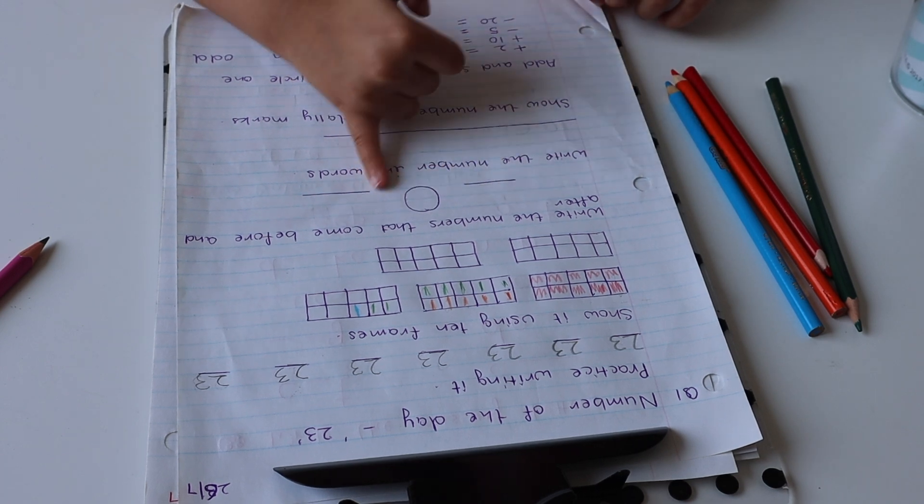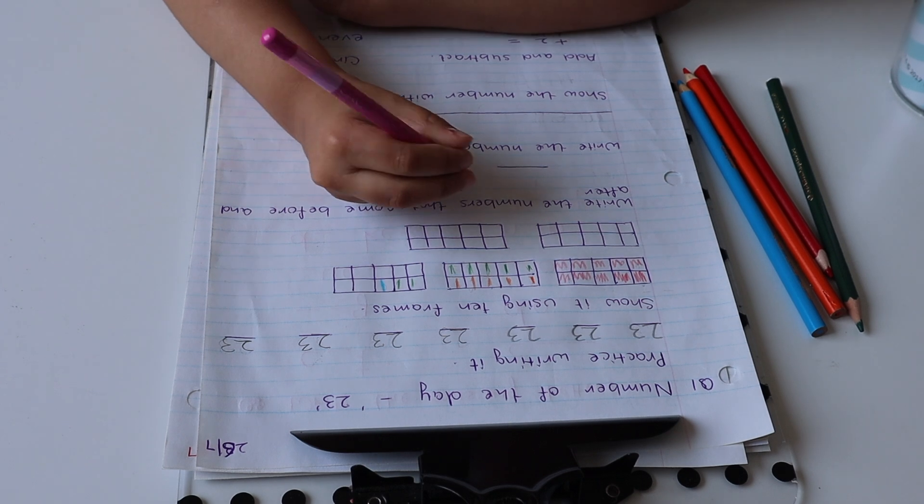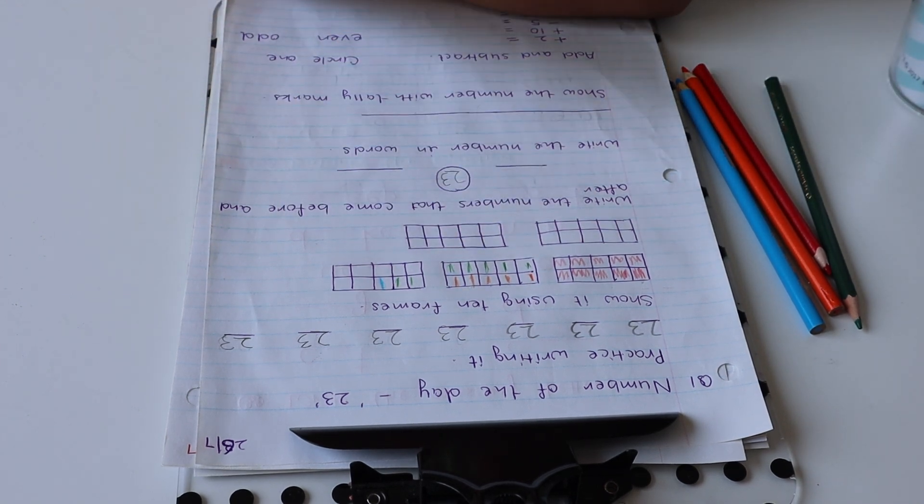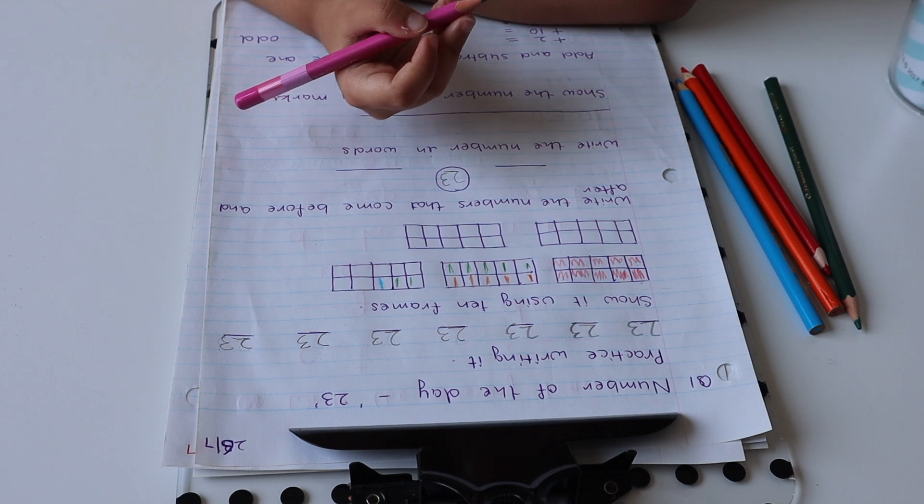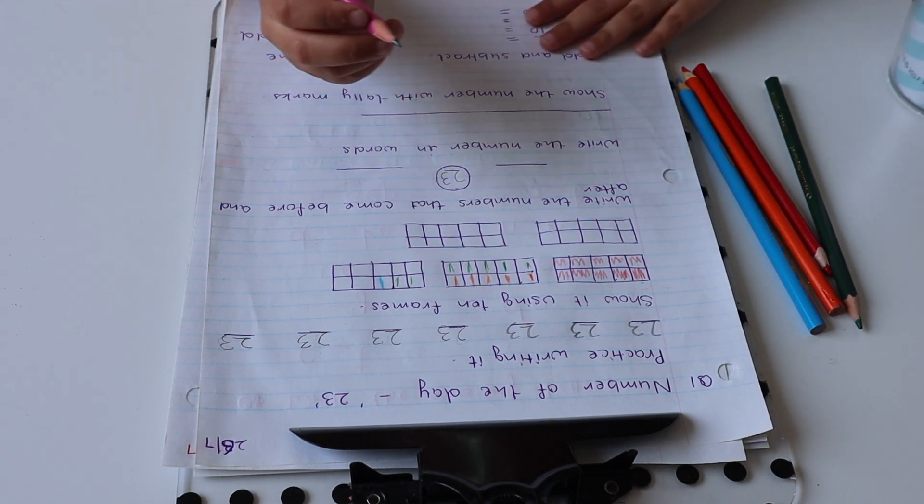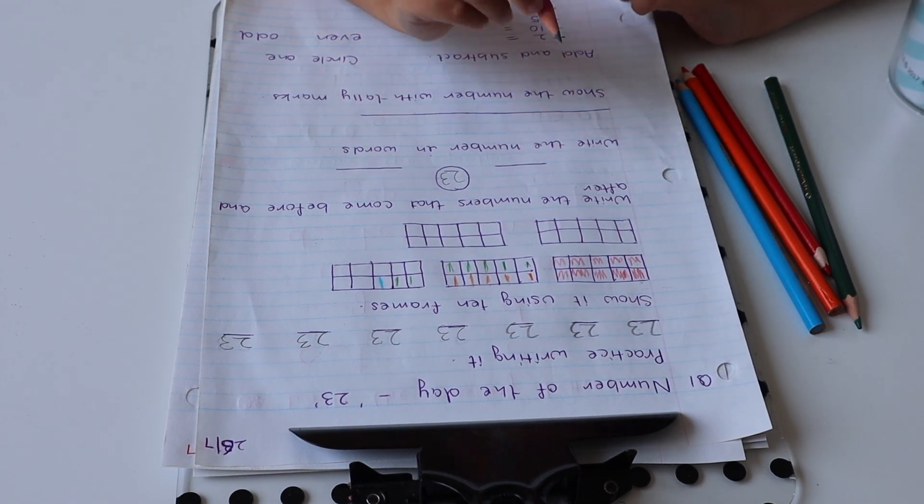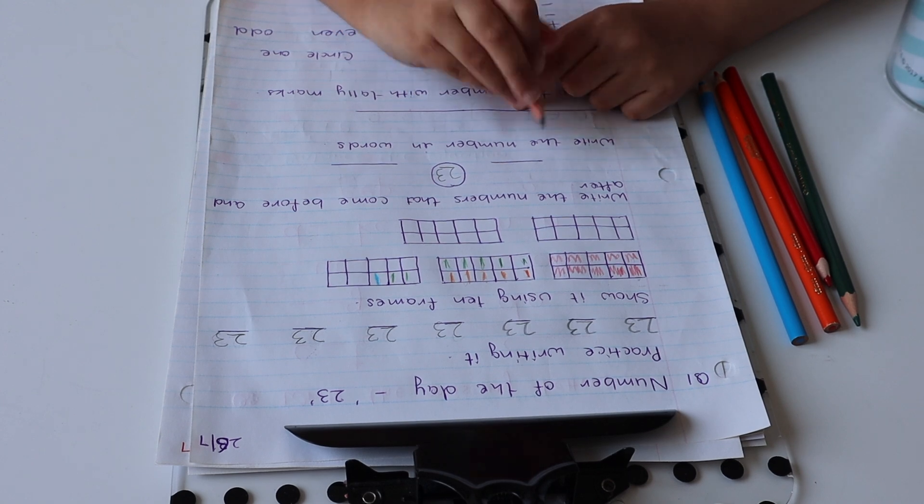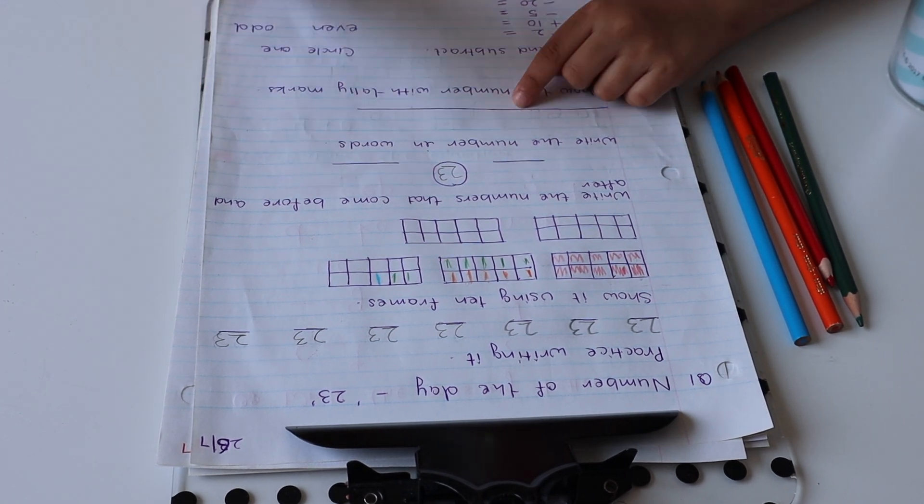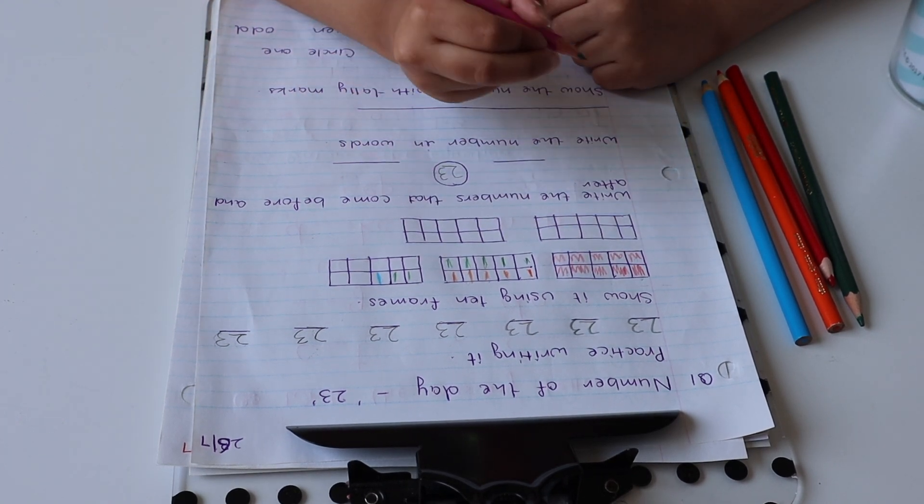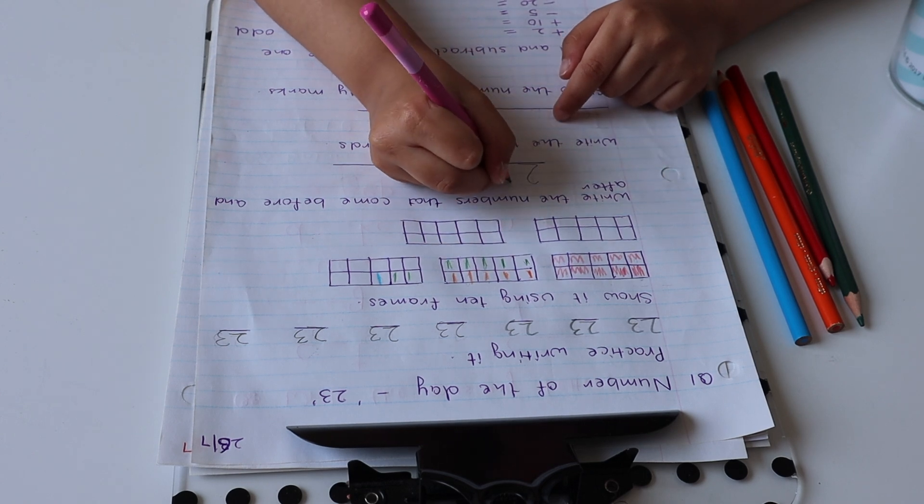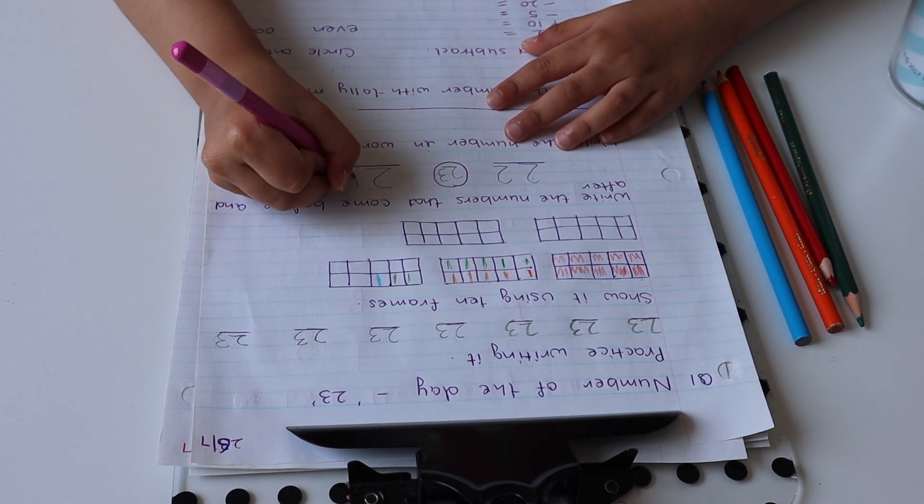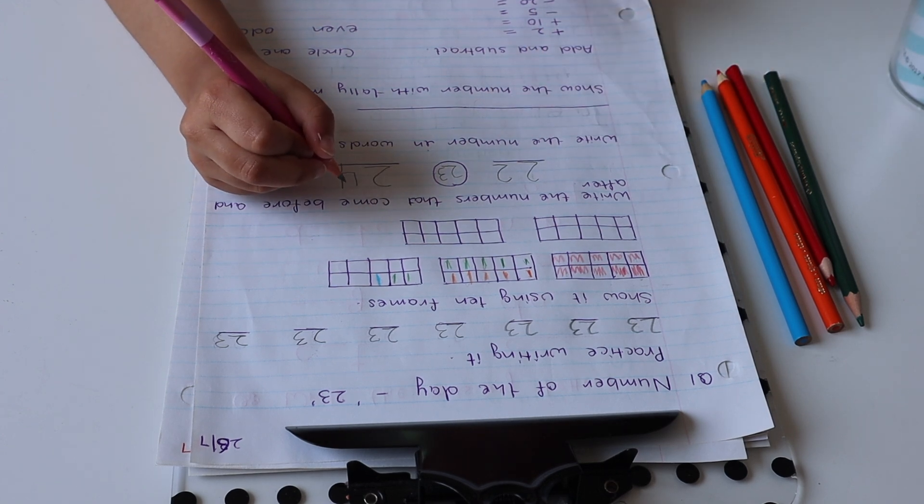Write the numbers that come before and after. What you have to do here, the easiest thing, we first have to write the number so we know which one comes before and after. So what comes before 23? 22. And what comes after 23? 24. Very nice. Write the number in both.